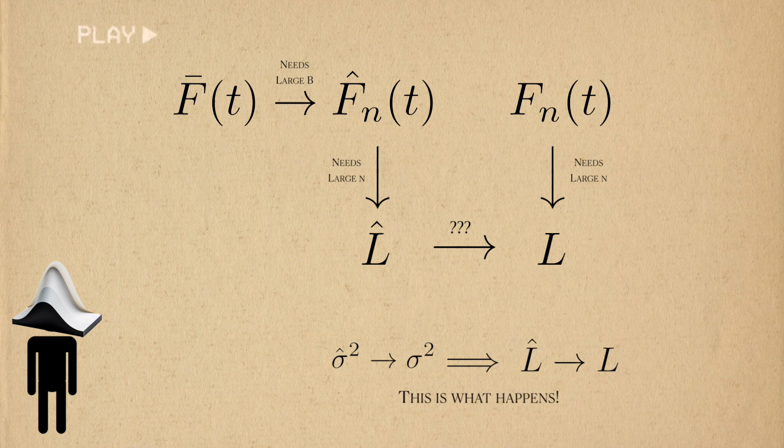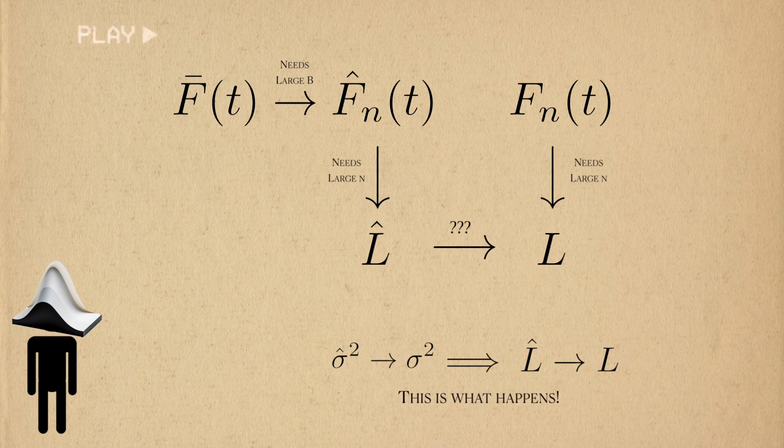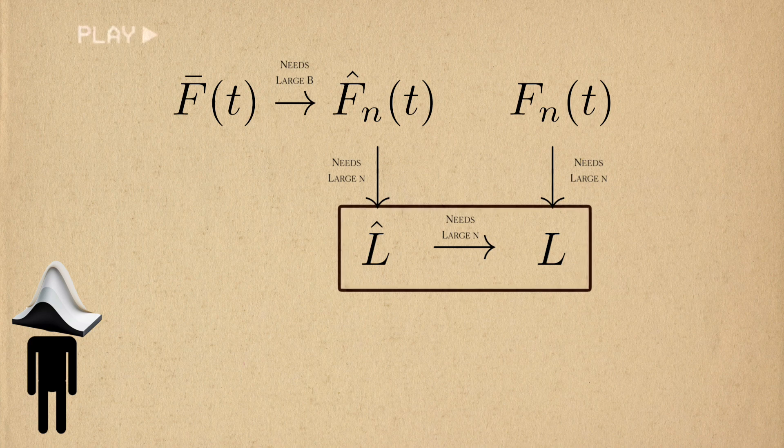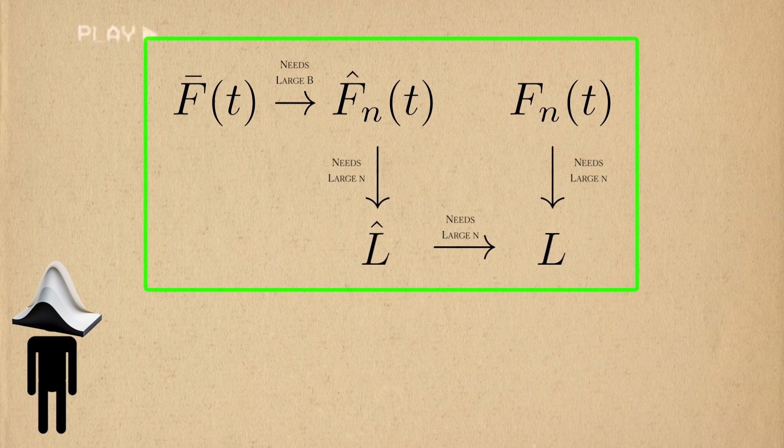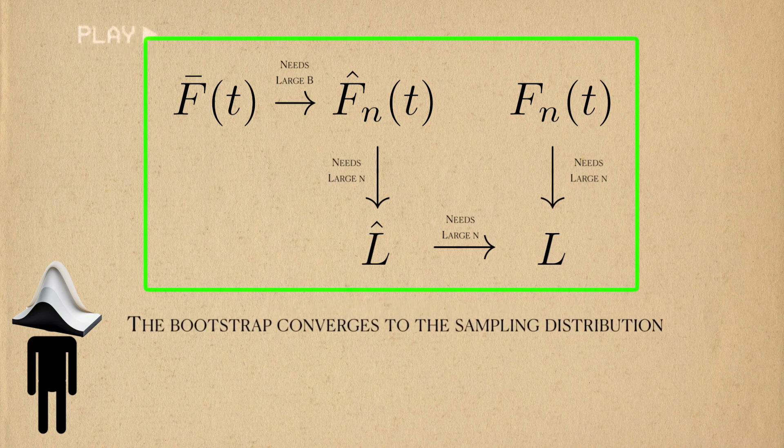As it turns out, the bootstrap variance will converge to the population variance with a large enough sample size, which means that L hat will also uniformly converge to L. And that's it! We've established the necessary links that allow us to say that the bootstrap distribution uniformly converges to the sampling distribution.